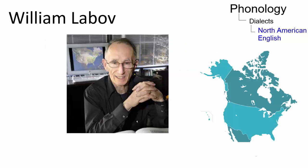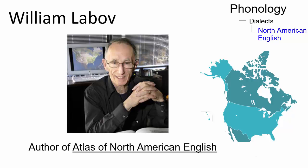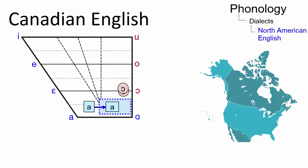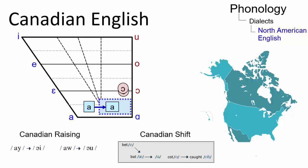Canadian English is an under-described variety of English whose regional dialects have just recently been defined in Labov's Atlas of North American English. It exhibits a number of robust phonological features such as Canadian raising and the Canadian shift.